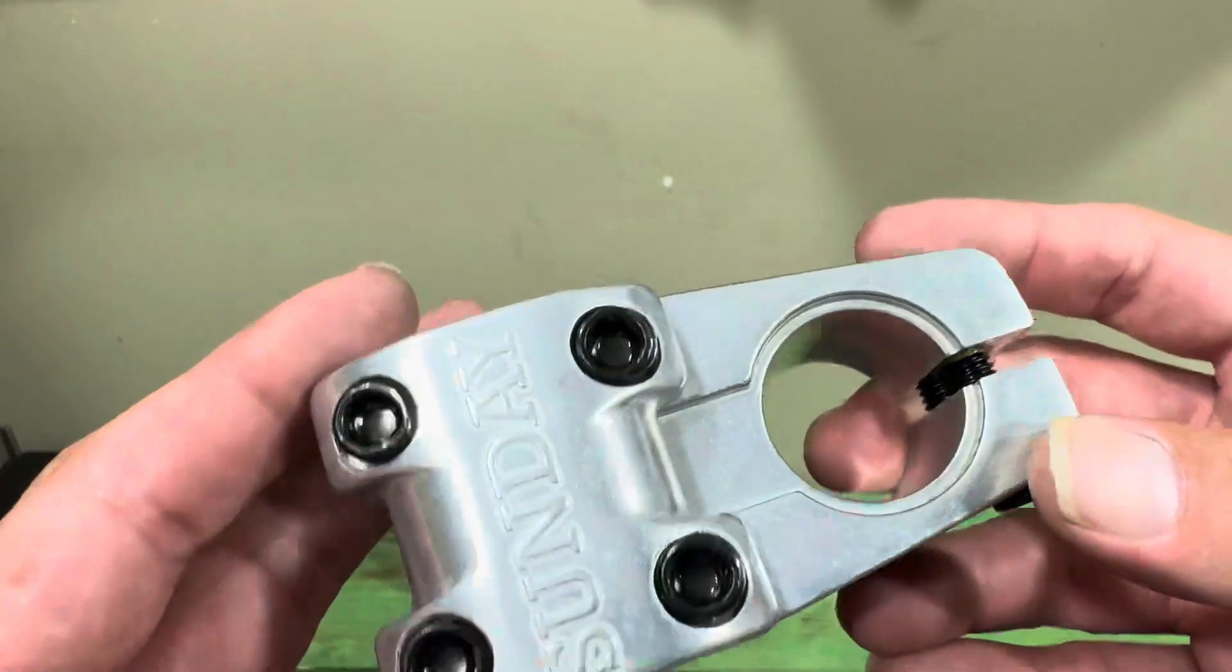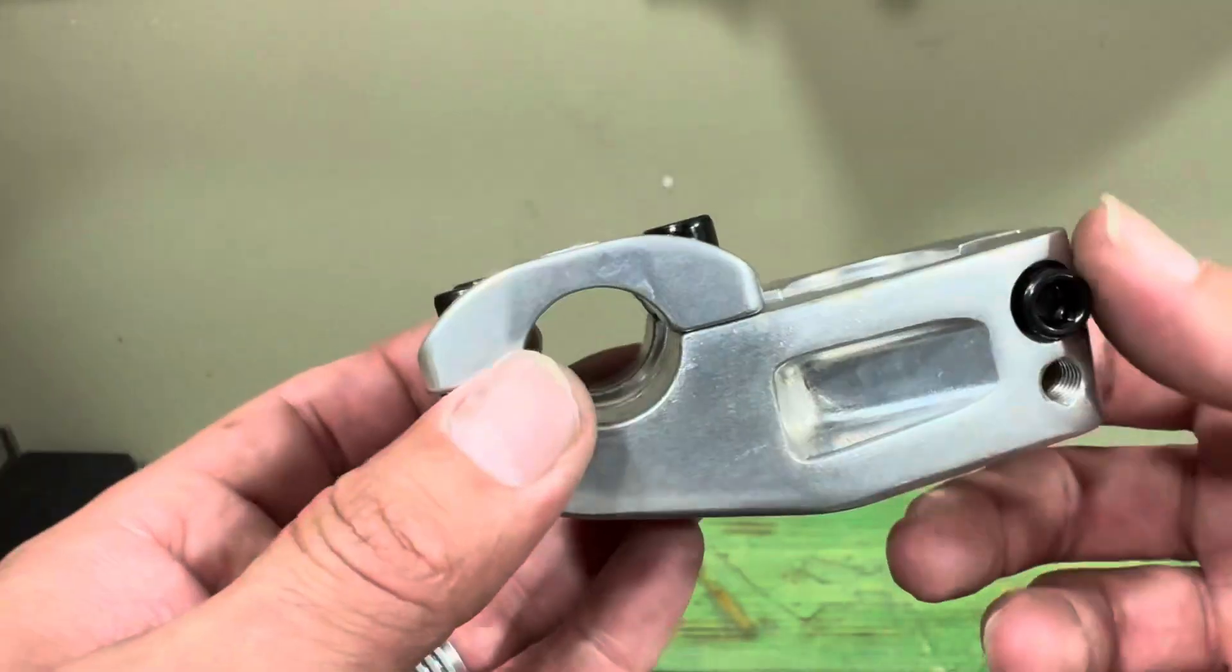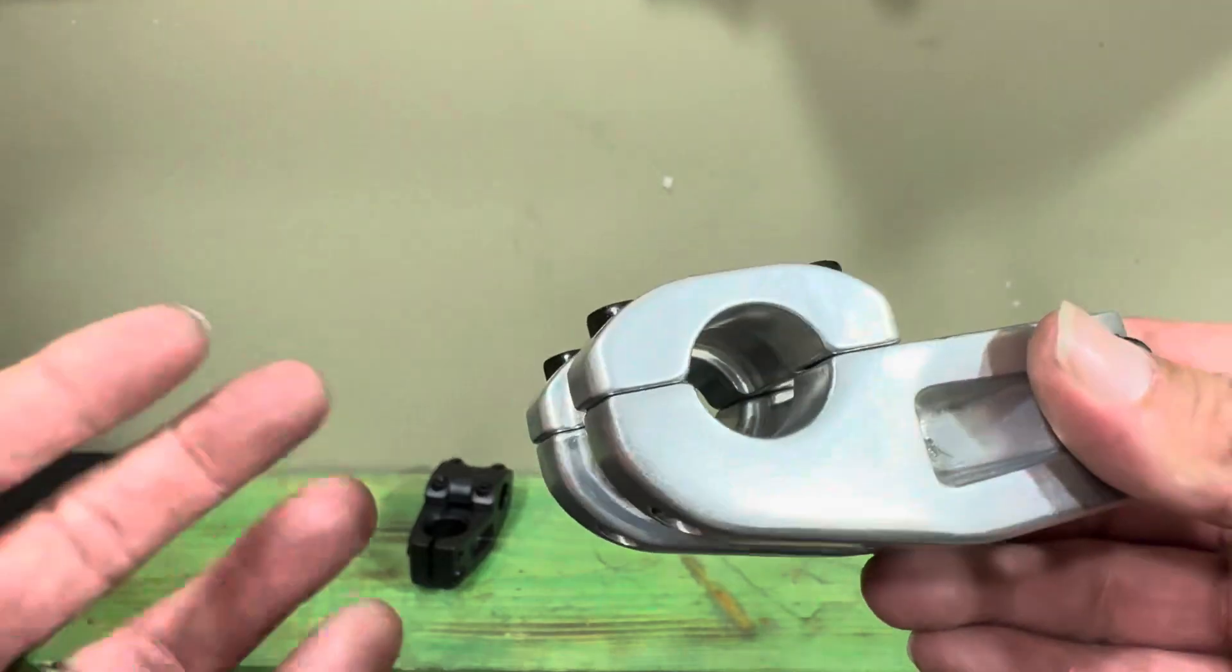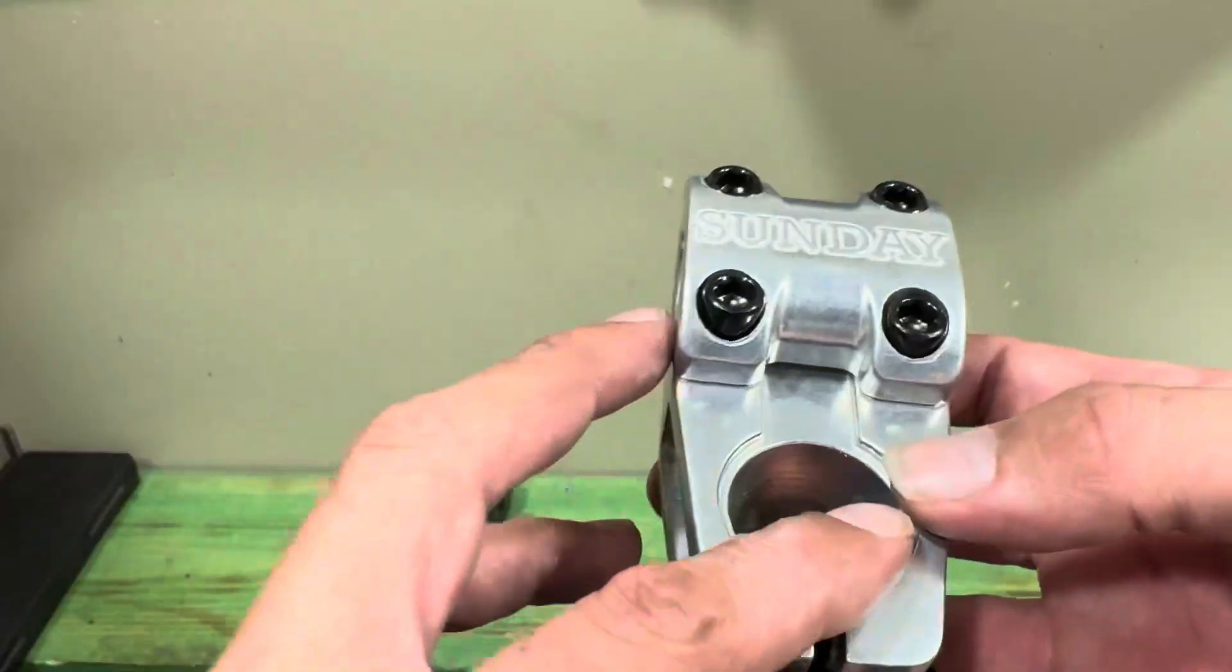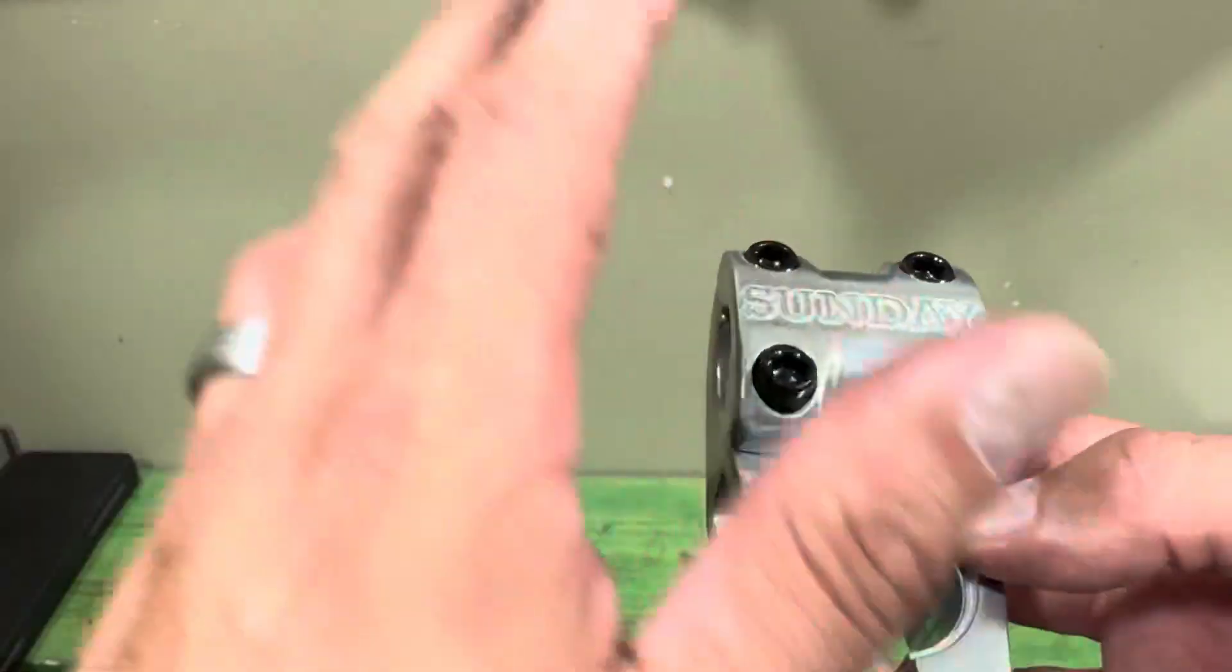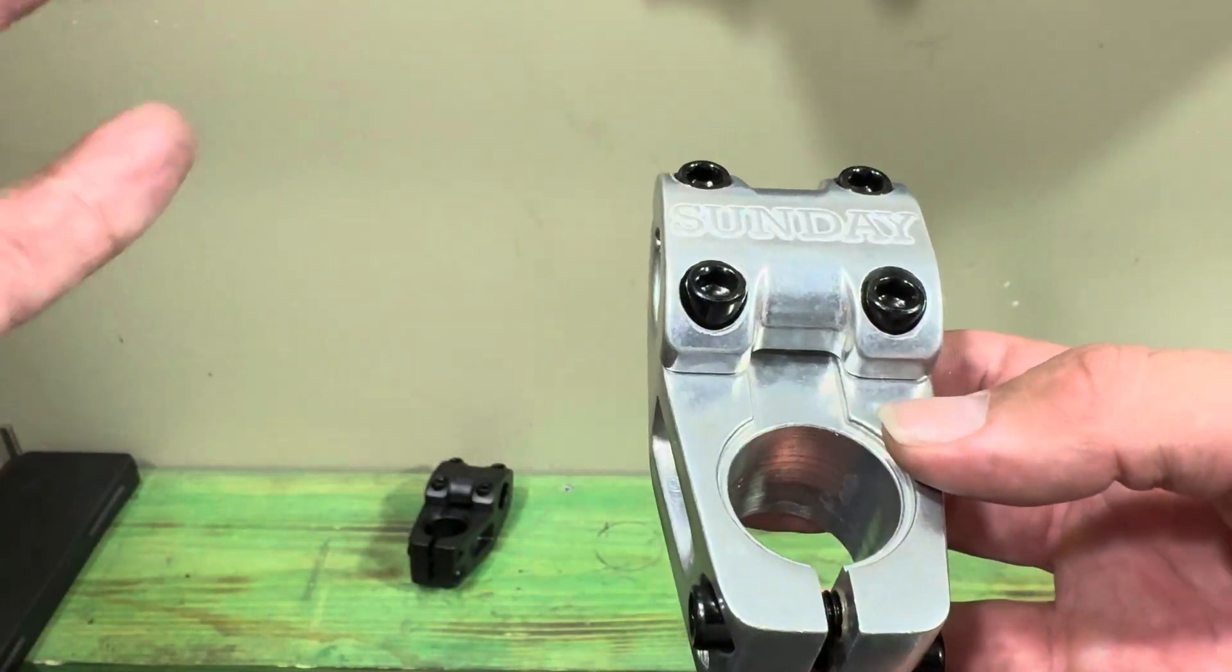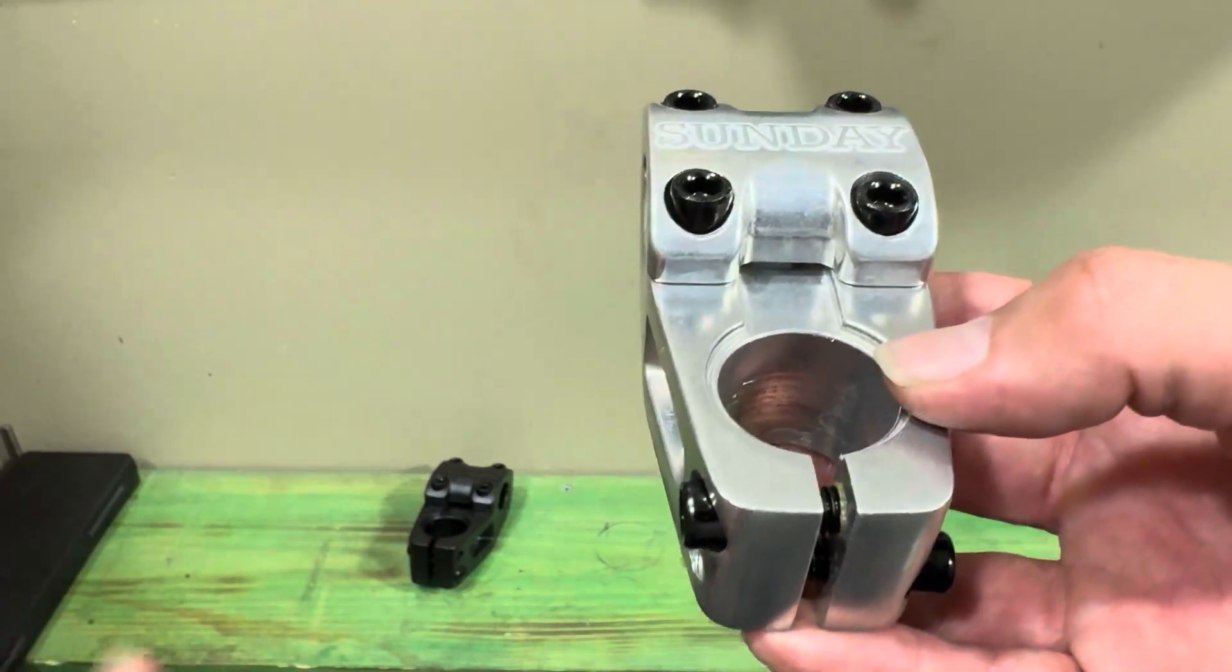So this stem might work if you have the inch and an eighth threadless forks. If you don't, hit us up, we'll be able to point you in the right direction to get you some BMX bars on your bike. This stem is available in multiple different colors, but most of the time it's only available in polish and black, and then occasionally they have limited edition colors which come and go. So if you see them, head up to our website and pick you up one of those colored ones.